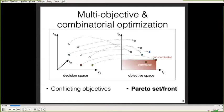We are in the context of multi-objective and combinatorial optimization. In multi-objective optimization, we cannot give one unique solution at the end of an algorithm because we have conflicting objectives. For example, between two solutions, we cannot give the best solution because the red solution is better on F1 and the blue solution is better on F2. However, the red solution is better than the yellow solution because it is better on both F1 and F2.